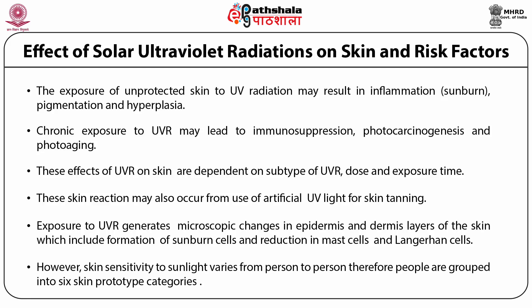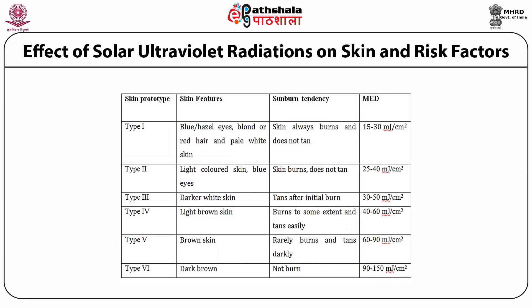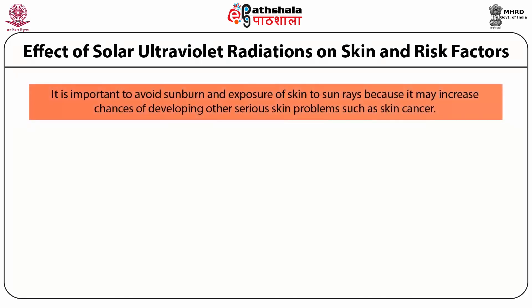Skin sensitivity to sunlight varies from person to person. Therefore, people have been grouped into six skin prototype categories based on baseline skin color. Individuals with pale white skin, blue or hazel eyes, and blonde or red hair are grouped as Type 1 skin and are at much greater risk of sunburn than individuals with Type 6 skin. The MED (minimal erythema dose) required to produce erythema at an exposed site is generally lower in Type 1 skin. It is important to avoid sunburn because exposure to sun rays may increase the chances of developing serious skin problems such as skin cancer.